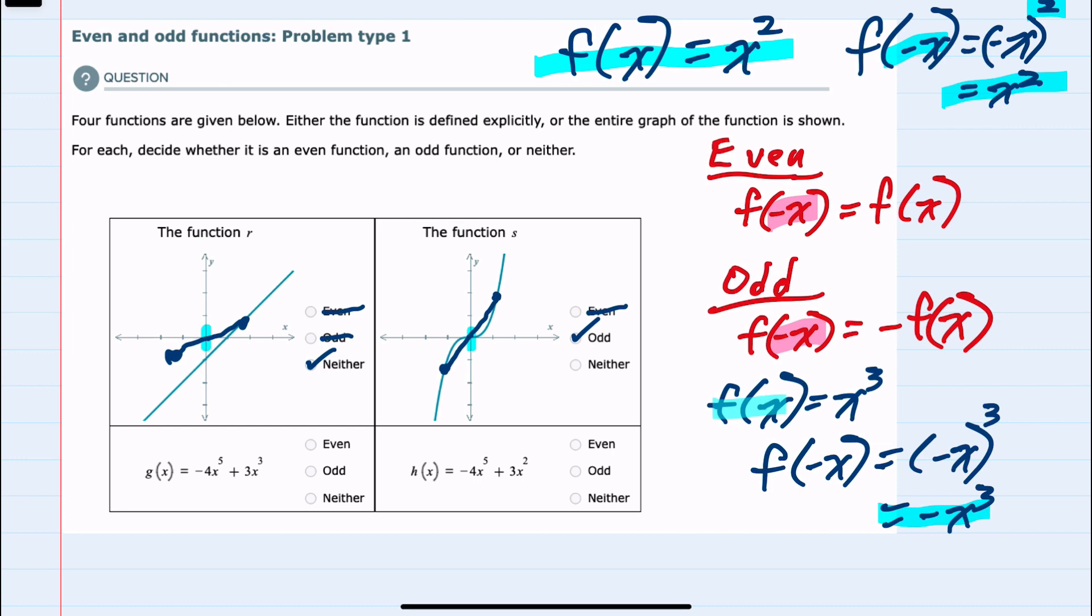So we don't get the same function that we started off with. We get the opposite function. And again, this happened because the powers of x were odd.